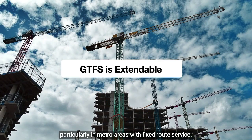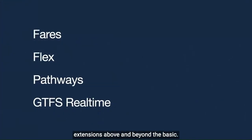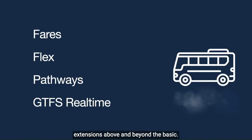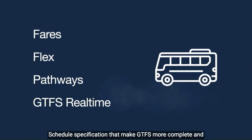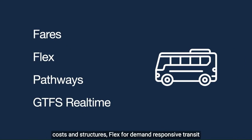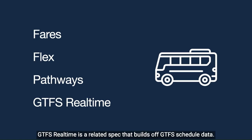GTFS is most widely known for trip planning information, particularly in metro areas with fixed route service. However, there are a variety of optional extensions above and beyond the basic schedule specification that make GTFS more complete and more widely applicable, including fares for showing fare costs and structures, flex for demand-responsive transit options, and pathways for displaying accessibility information.